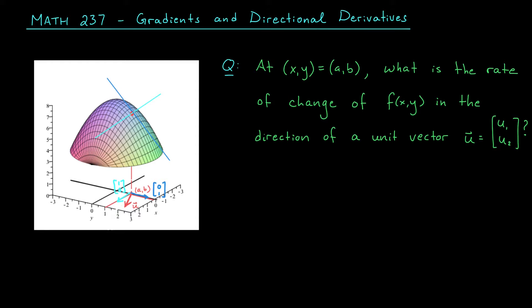But what if we want to move in a completely different direction? Maybe instead of moving from (a,b) in the direction of (1,0) or (0,1), we choose to move with some other unit vector u. If you think about it, we're looking for a derivative of our function as we move along this red line. Since this line passes through (a,b) and moves in the direction of u, its vector equation is given by (x,y) = (a,b) + su, where s is just a parameter that can take on any real number. As we change the value of s, we trace out this red line. When s is zero, we're exactly at the point (a,b).